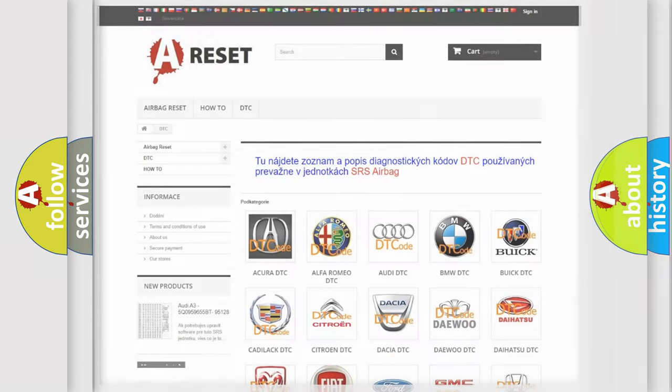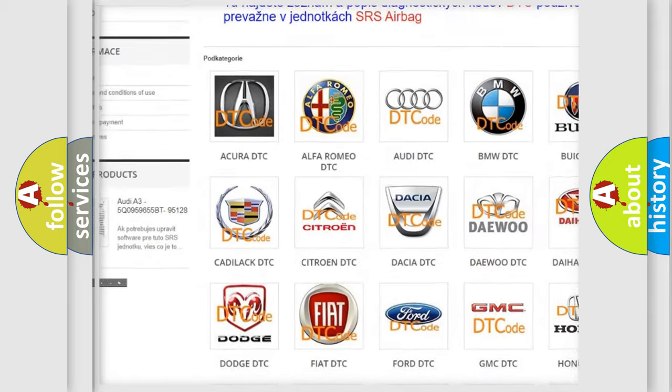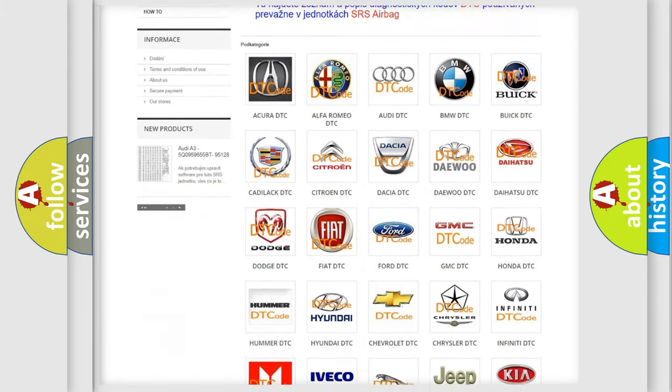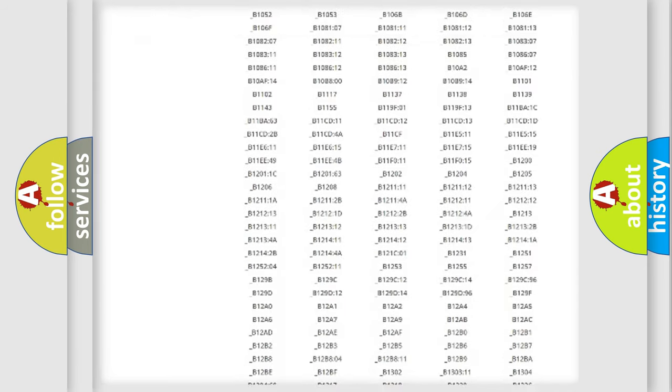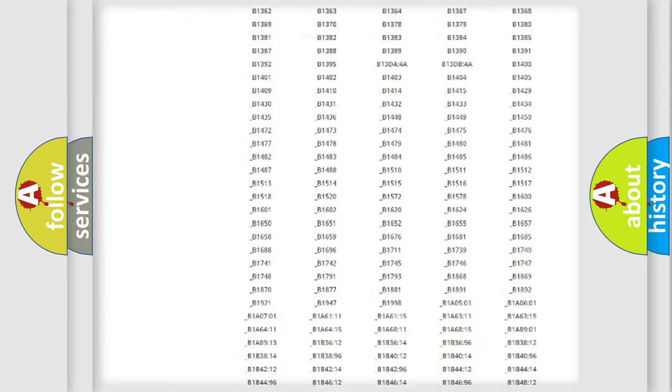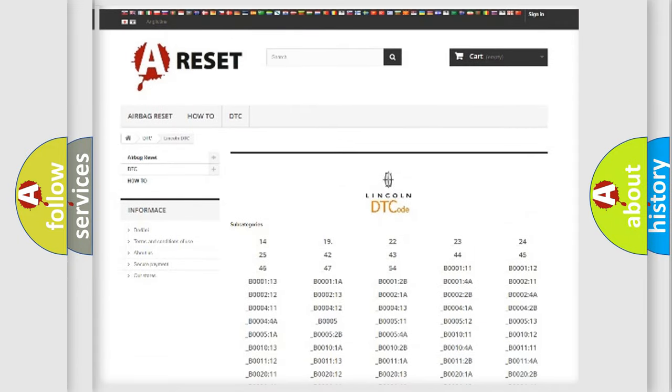Our website airbagreset.sk produces useful videos for you. You do not have to go through the OBD2 protocol anymore to know how to troubleshoot any car breakdown. You will find all the diagnostic codes that can be diagnosed in a link and vehicles, also many other useful things.